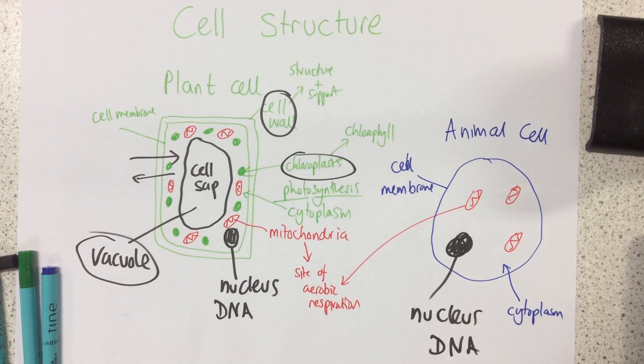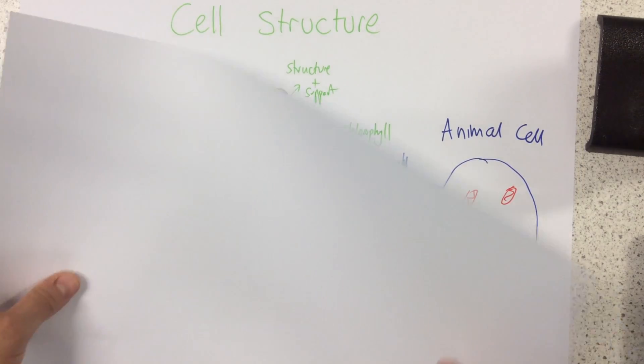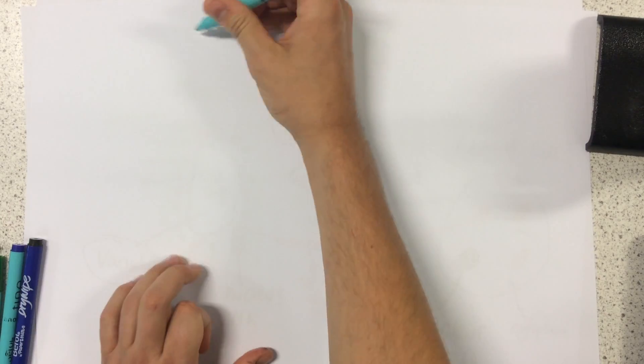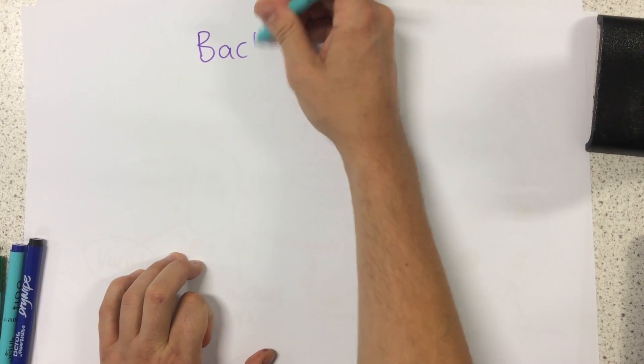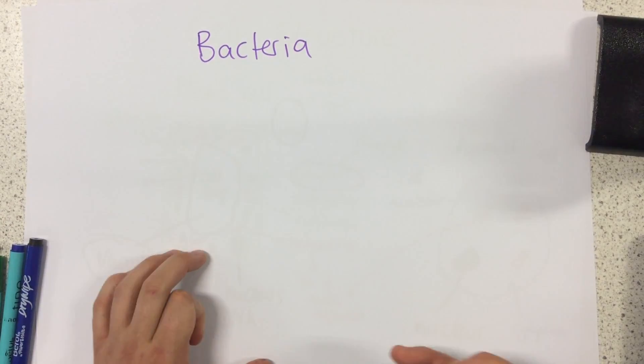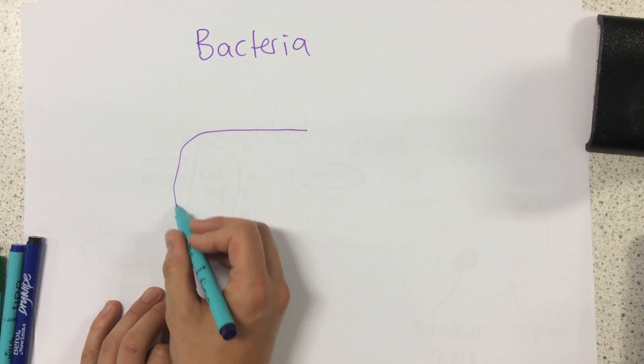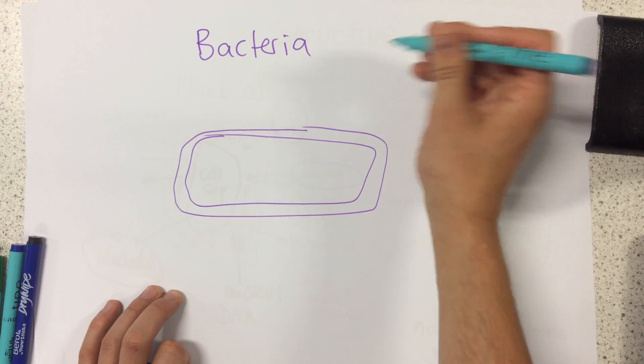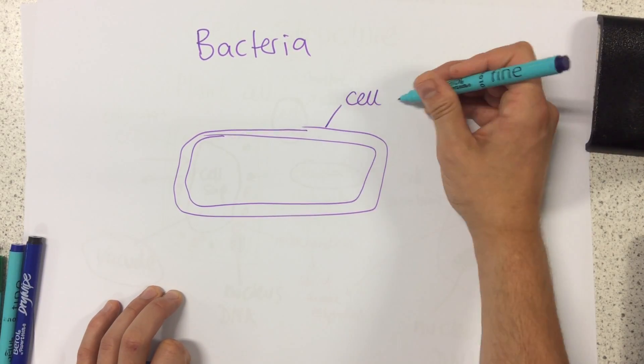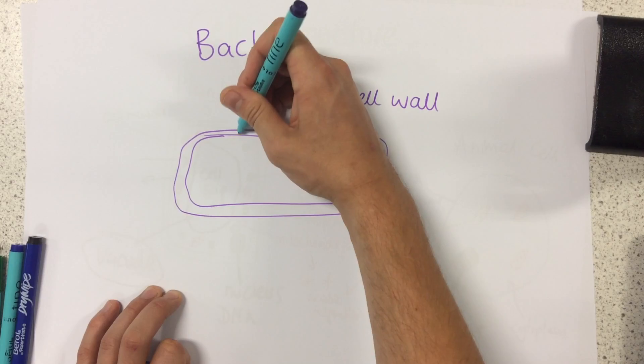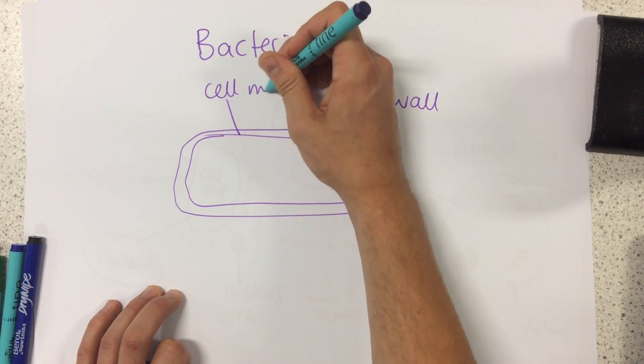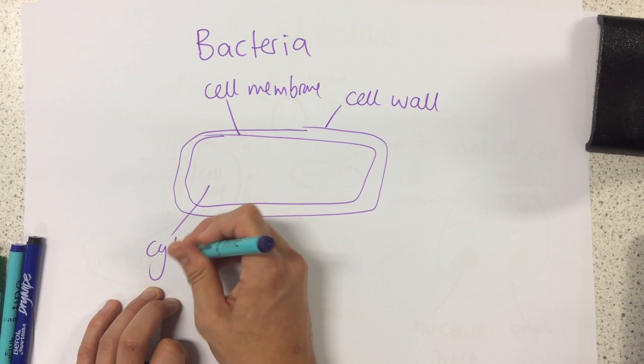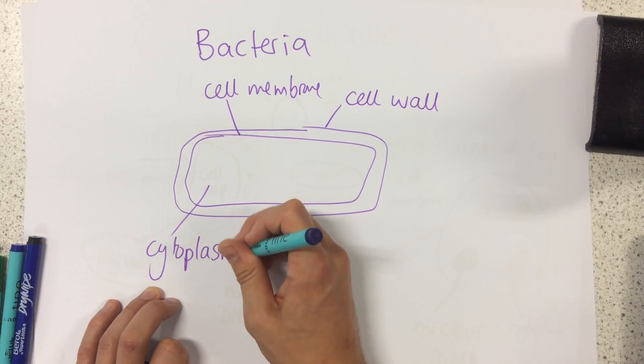So there's one more type of cell we just need to look at. We are going to look at bacterial cells. Now bacteria also like plant cells contain a cell wall. They also contain a cell membrane and they also contain cytoplasm. So there's some definite similarities right there.